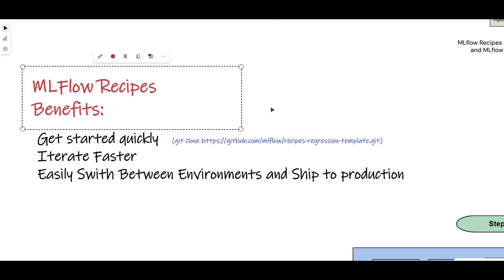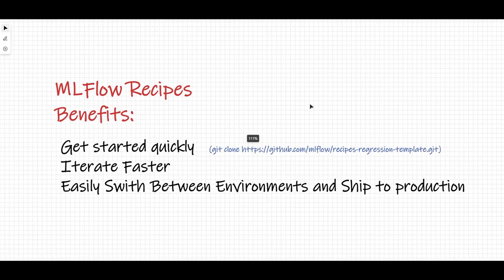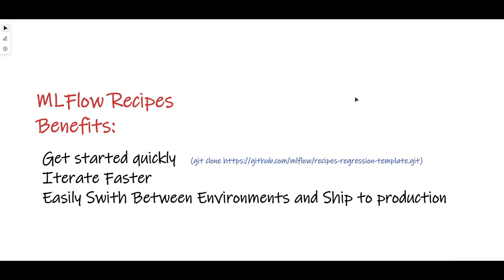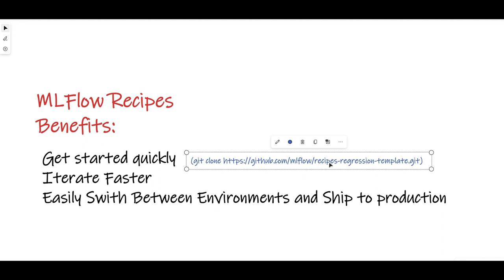The first benefit: you get to start very quickly. Instead of developing Python code folders, subfolders, and structures while making sure it's aligned with best practices and sharing with the rest of the team how you're structuring your ML artifacts — you don't need to do that. Just grab this template and change it. For example, if you want to train a regression model, just git clone the recipe regression template from MLflow Recipes documentation. You can change regression to classification and all the templates are generated for you — no need to create from scratch.